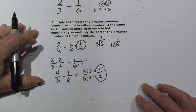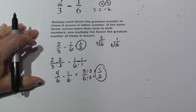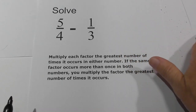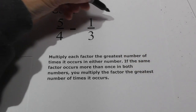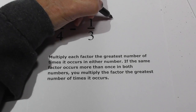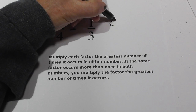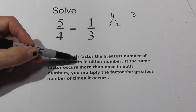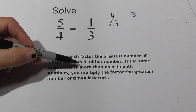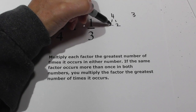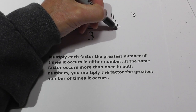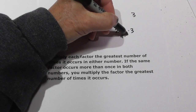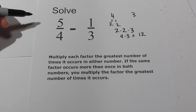Now let's look at our next fraction and apply the same rules. We need to find a common denominator, so I will complete a factor tree. Four is two times two, and three is already prime. Remember, I multiply each factor by the greatest number of times it occurs in either number. Two occurs two times in four, so it will be two times two, and then you have one three. Two times two is four, four times three equals twelve, so my common denominator is twelve.